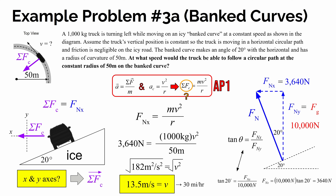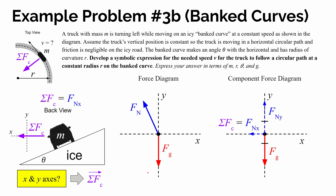We're going to finish this video by solving the same problem symbolically — finding an expression for the needed speed rather than an actual number. A truck with mass M is turning left on an icy banked curve. We make the same assumptions: vertical position stays constant, friction is negligible, the angle is given as theta, mass as M, and the radius of curvature as R. We want to develop a symbolic expression for the needed speed V in terms of M, R, theta, and G (the gravitational field strength).